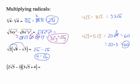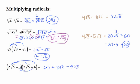For (2 root 5 minus 3)(3 root 5 plus 4), distribute all four terms. 2 root 5 times 3 root 5: 2 times 3 is 6, and root 5 times root 5 is 5, giving 30. Then 2 root 5 times 4 gives plus 8 root 5. Negative 3 times 3 root 5 gives minus 9 root 5. Negative 3 times 4 gives negative 12. Collecting like terms: 30 minus 12 is 18, and 8 root 5 minus 9 root 5 is negative root 5. The answer is 18 minus root 5.